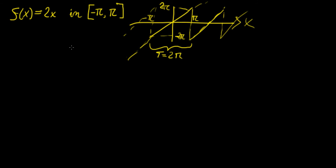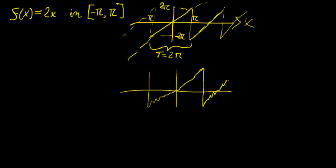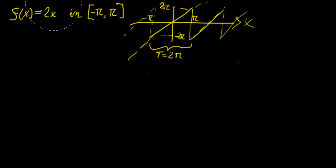The Fourier series expansion is going to plot a function that, when the terms approach infinity, looks like this — repeating the same interval over and over again in infinite cycles. Even though the real function is not periodic, the Fourier series represents the approximation to that little interval. This is quite important because when we solve certain partial differential equations using separation of variables, the Fourier series expansion of a non-periodic function becomes very useful.